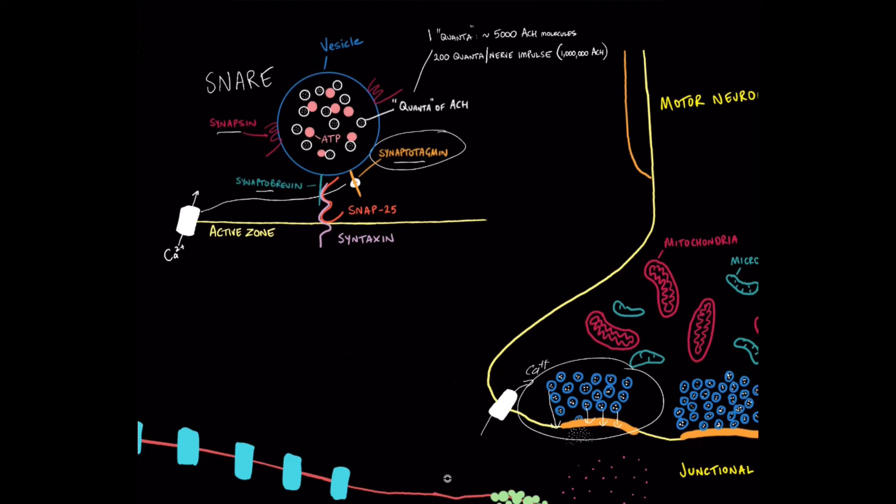When the calcium enters, the synapsin gets phosphorylated. So this gets broken down and that releases the vesicle from the internal cytoskeleton of the motor neuron. It liberates it and allows it to start moving towards the active zone.